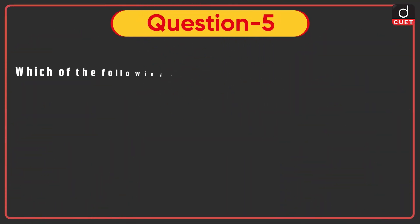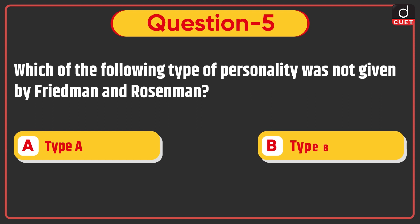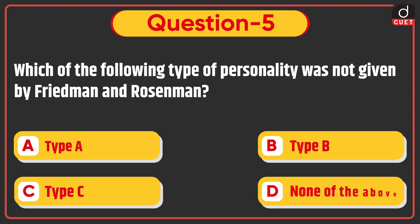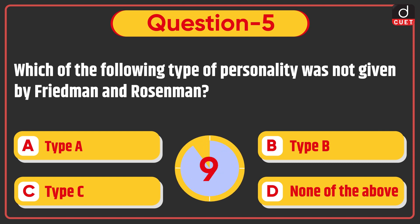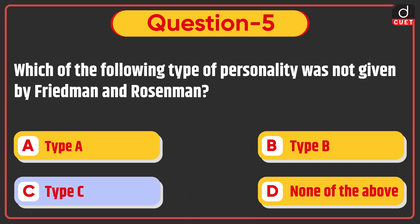Next question: which of the following type of personality was not given by Friedman and Rosenman — Type A, Type B, Type C, or none of the above? The correct answer is option C: Type C.